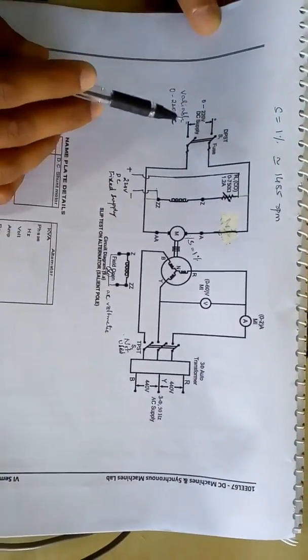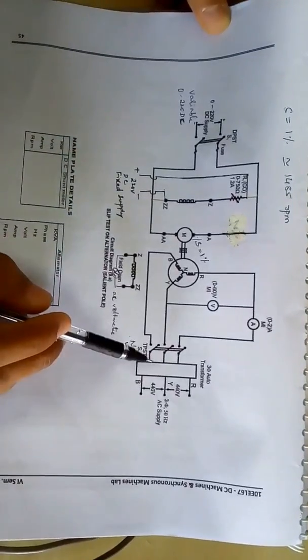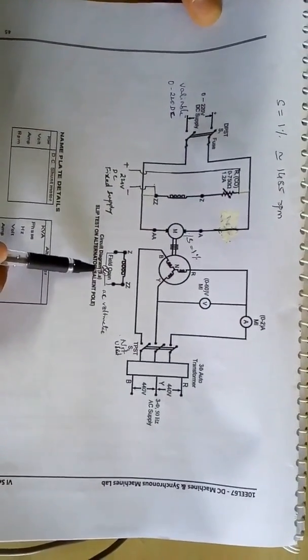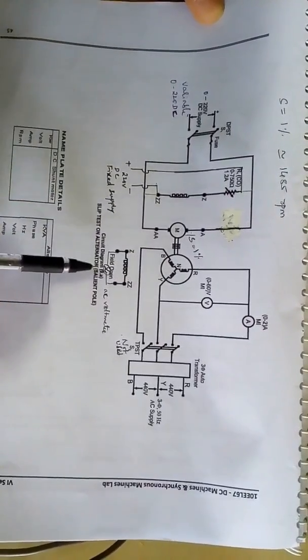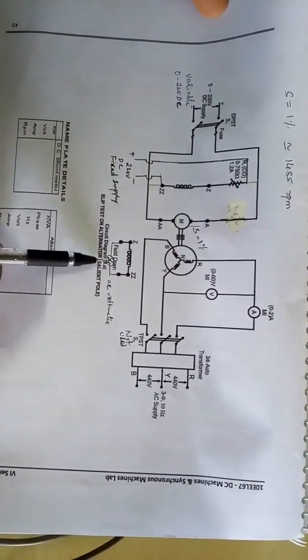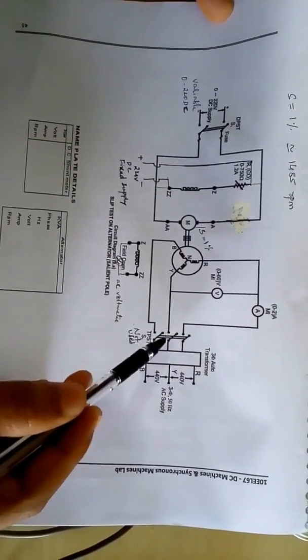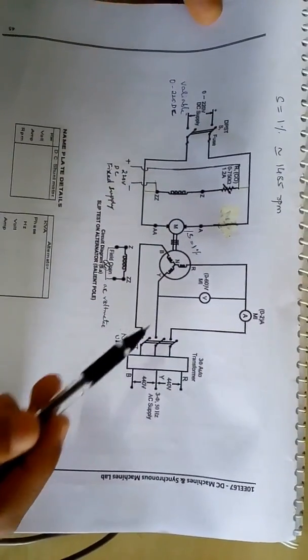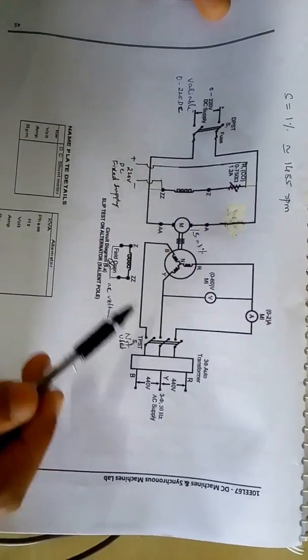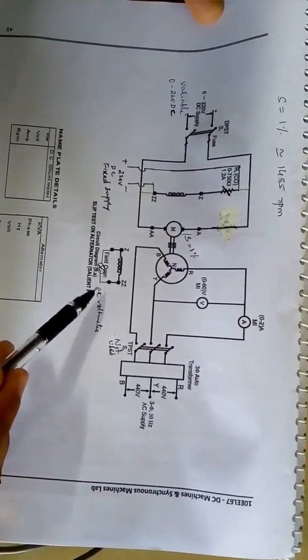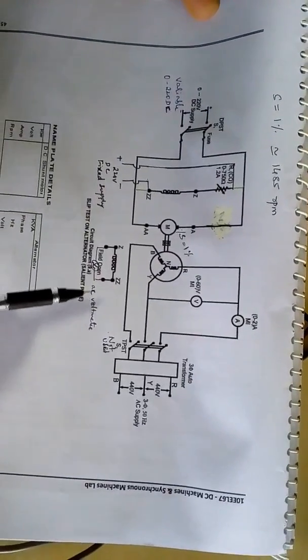Once we run, we make sure that the voltage reading across the open field of alternator is not high. If it is high, interchange any two terminals of the stator supply of alternator. If it is less, nearly around 10 to 12 volts, then it is in fine condition. It should not go beyond 50 volts. If it